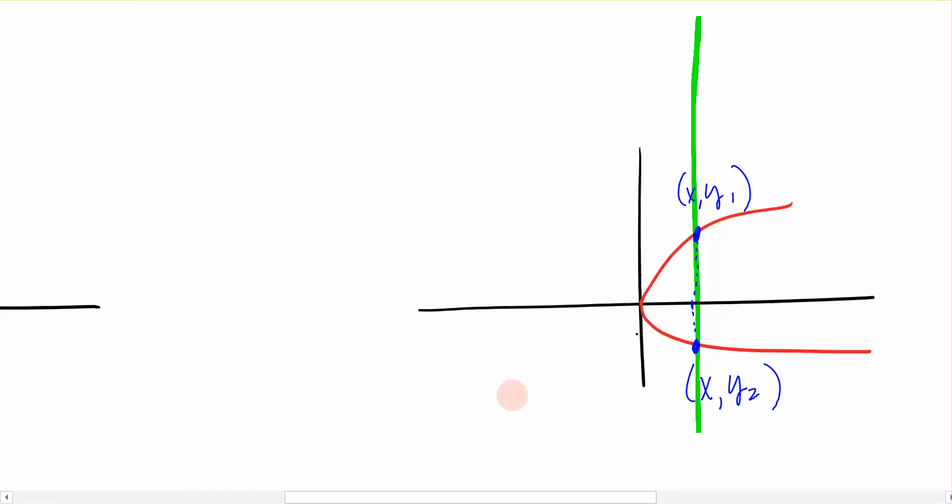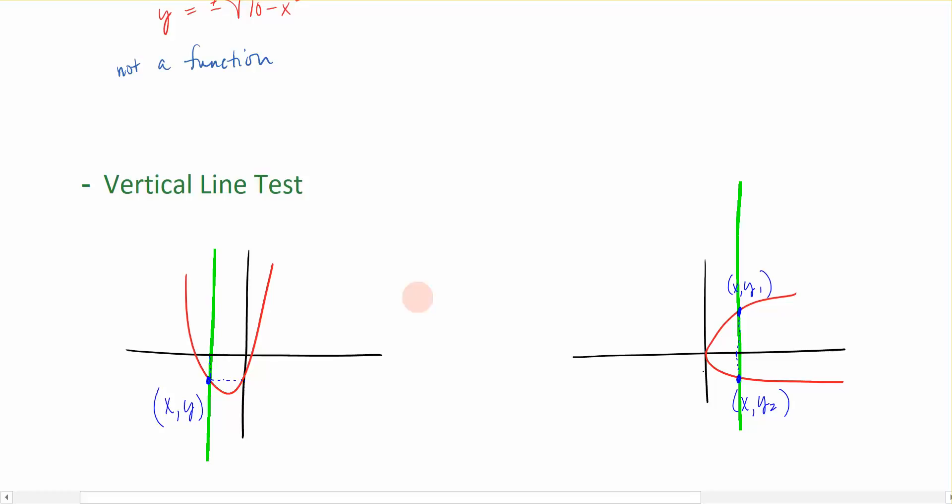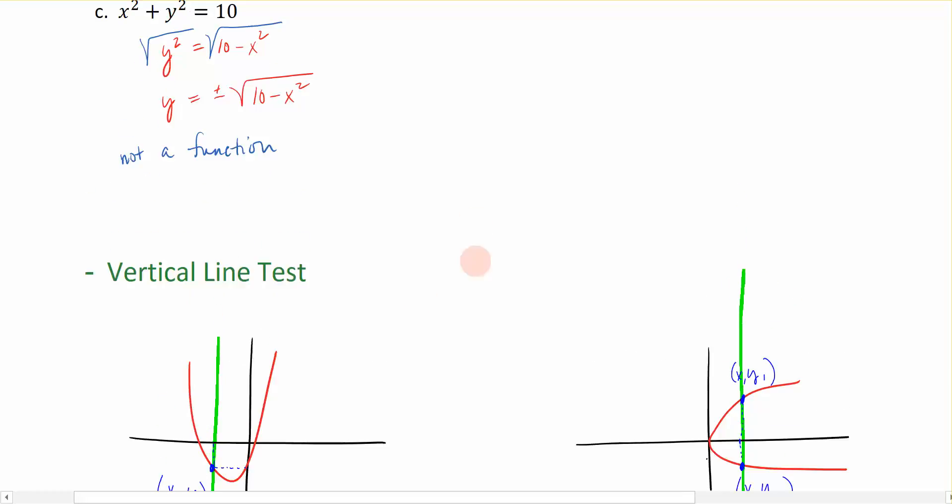If we were to look at the ordered pairs where we are touching the graph, you can see that by definition when we define a function, for every x there is exactly one y. Well this one says that if I have this x, I have two possible y values, and that's why it's not considered a function. The vertical line test is just an easy picture for us to determine it.